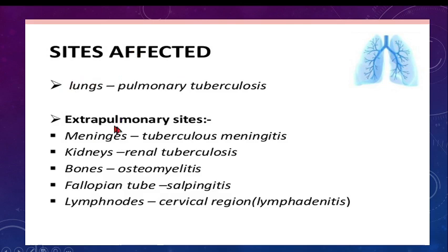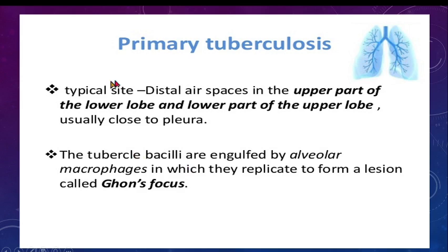The lungs are the most common site of tuberculosis. Extra-pulmonary sites include: meninges (causing tuberculous meningitis), kidneys (renal tuberculosis), bones (osteoarticular tuberculosis), fallopian tubes (tubercular salpingitis), and cervical lymph nodes (tubercular lymphadenitis).